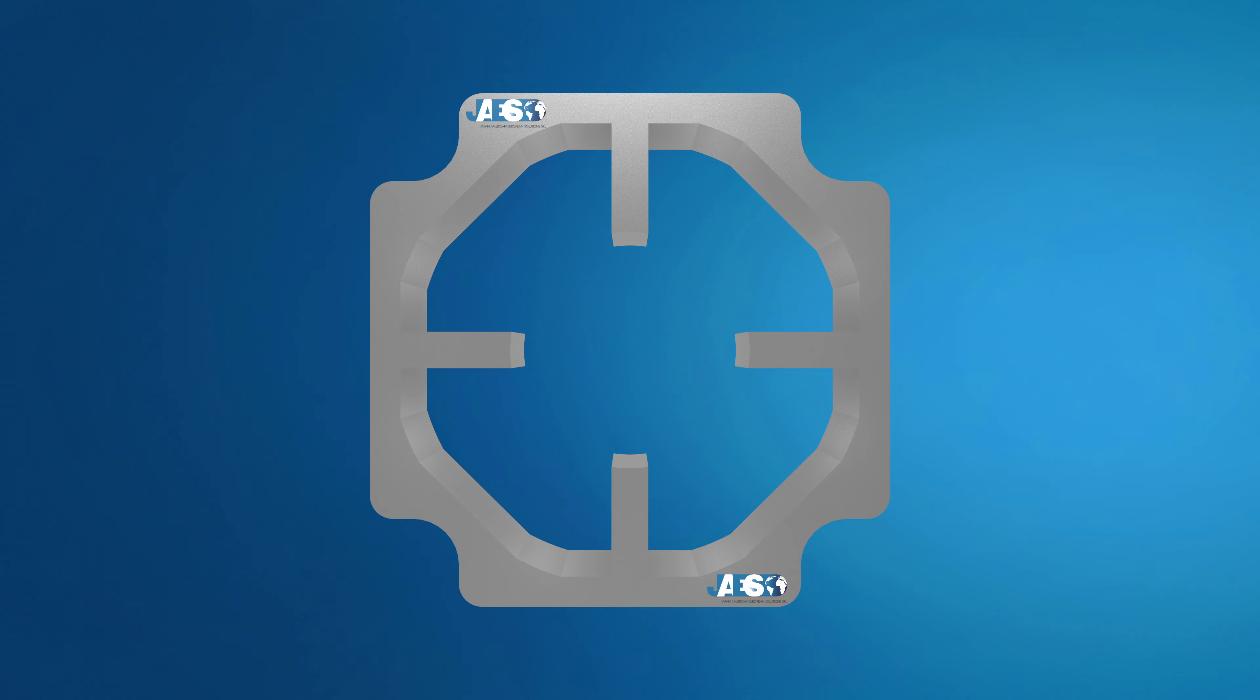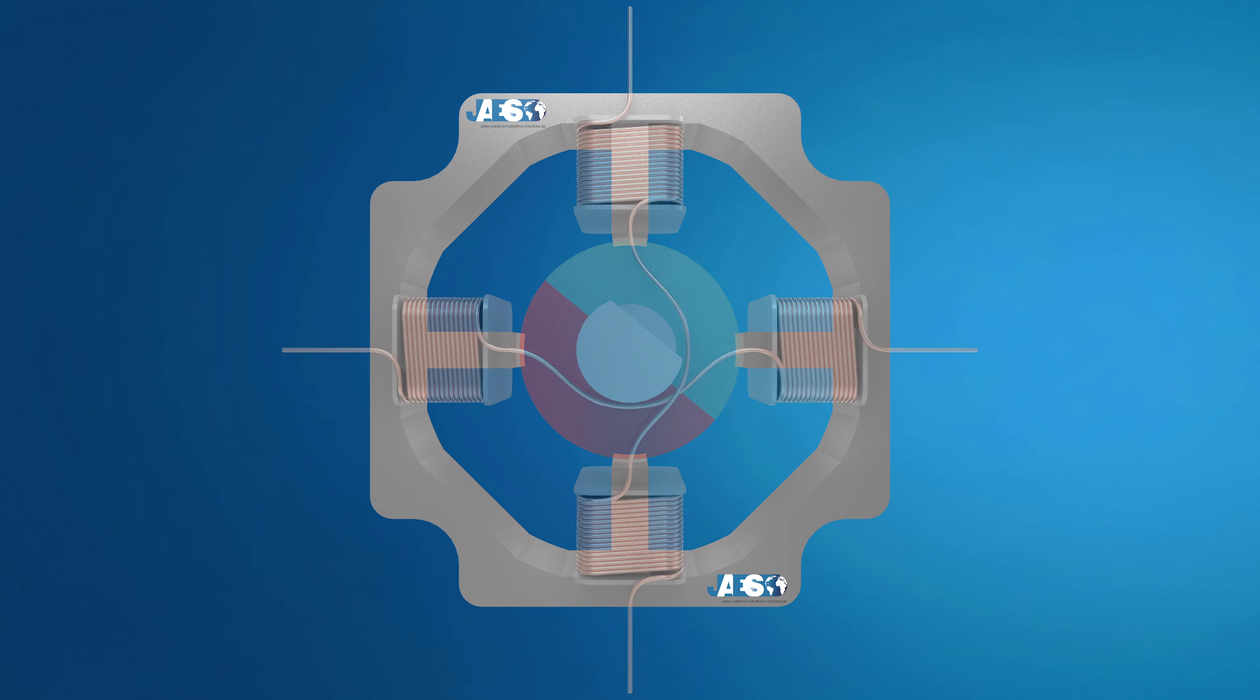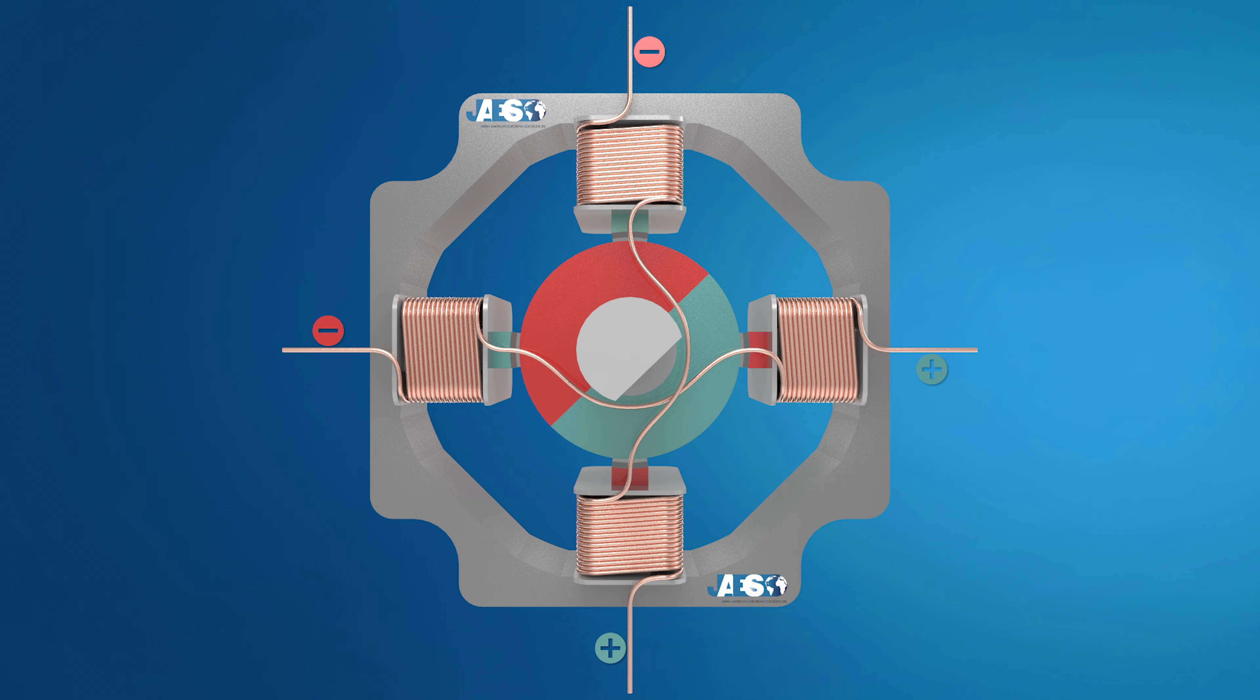Let's consider the example of the permanent magnet stepper motor seen in the first part of this video. This type of stepper motor requires the full step drive mode, that's because the rotor needs four steps in order to complete a 360 degree rotation. The full step mode provides high torque, since all the coils are always energized at any time.